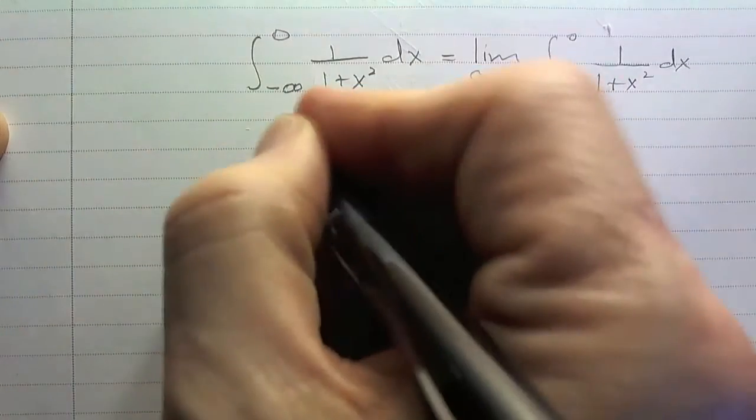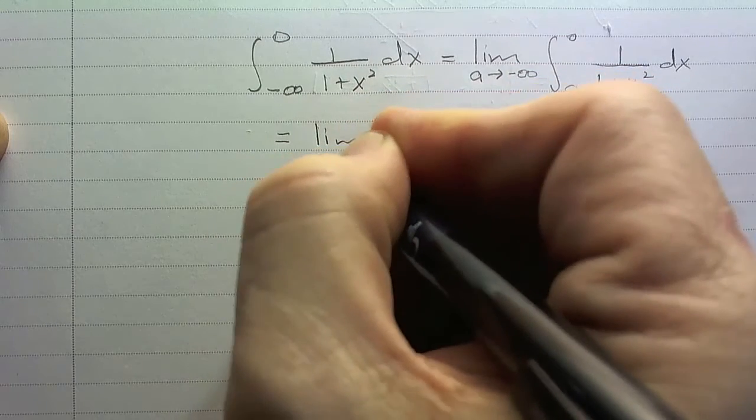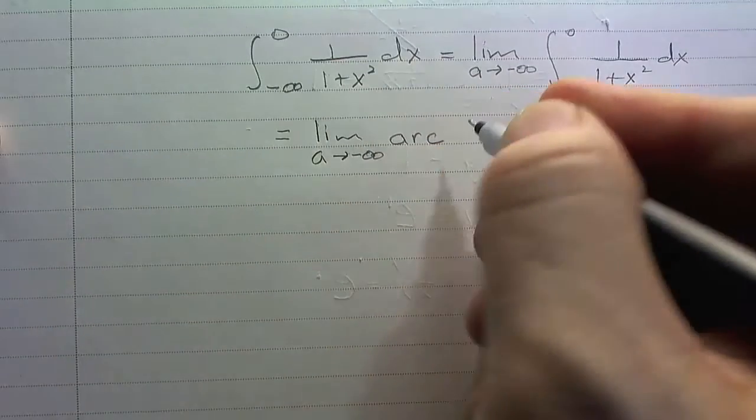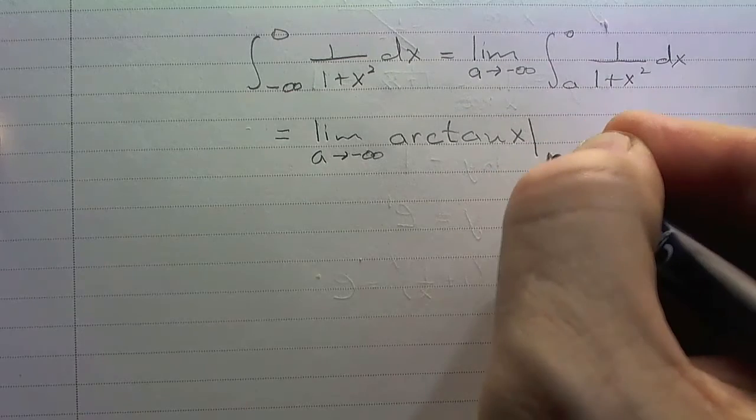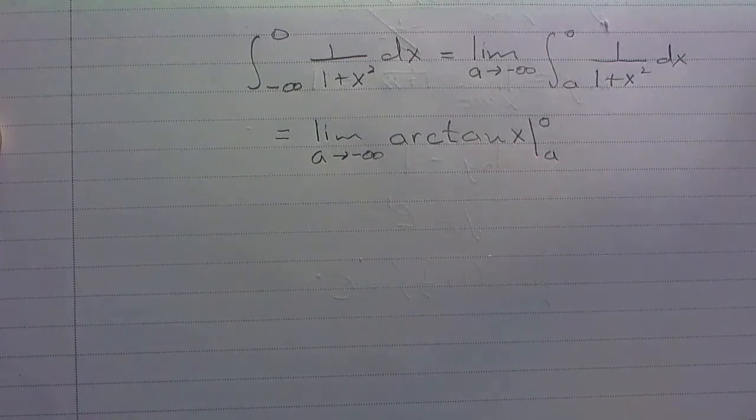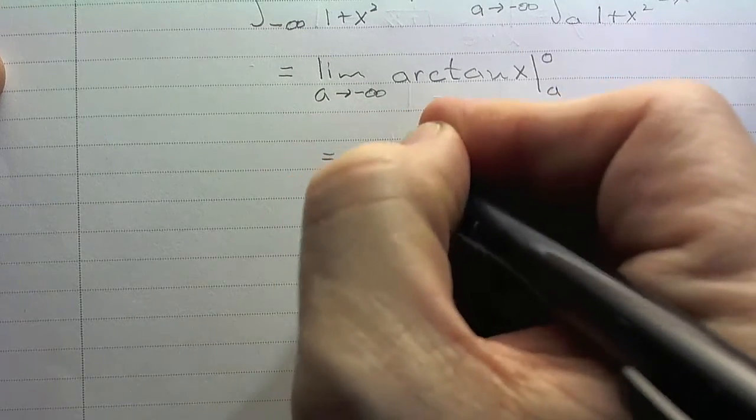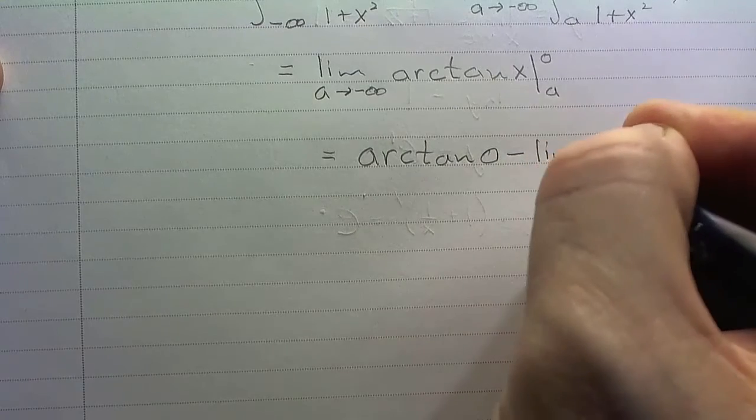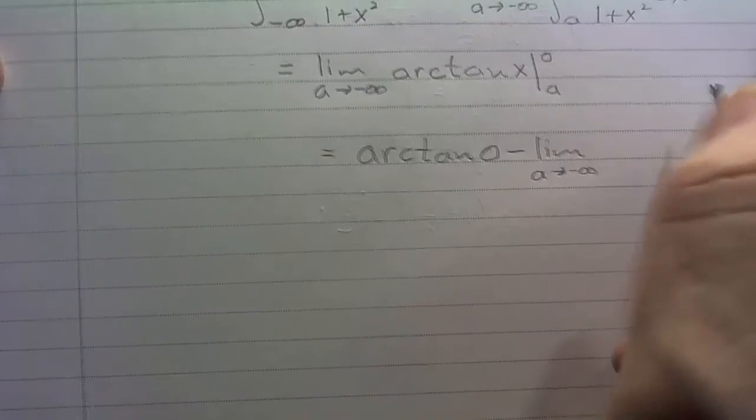Okay? And we work it exactly the same way. We've got the limit as a goes to negative infinity of arctan – arctan of x from a to 0. Like that. And now – so let's see what we've got here.